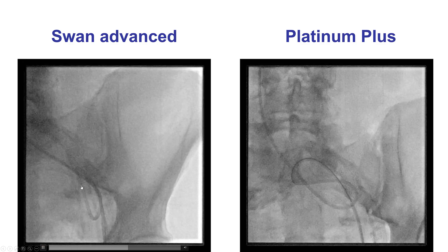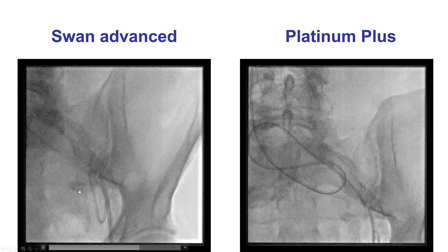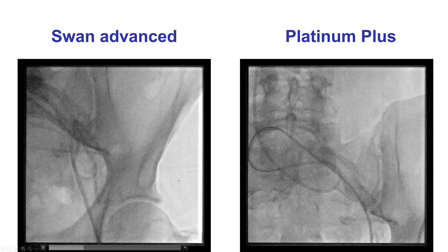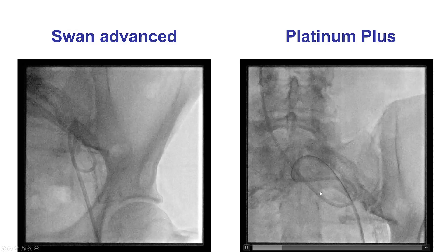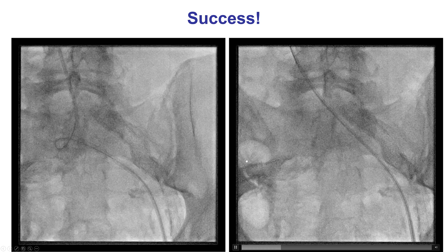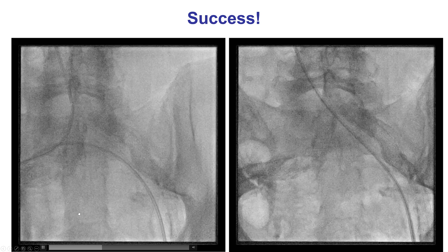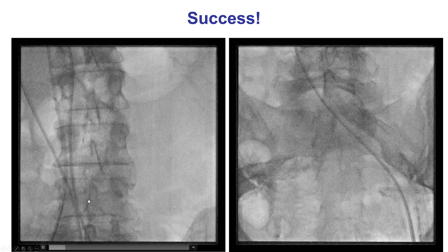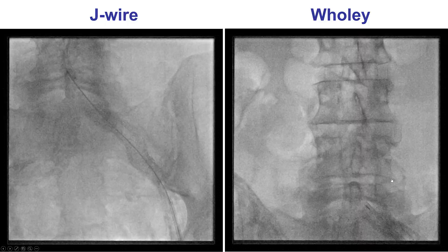So how to solve this problem — and of course, we haven't even started the PCI yet. What we did was re-advance the Swan back into the vessel and then tried to advance the stiff Platinum Plus wire through the Swan. Eventually, after advancing further up, we were able to bring it back. There was still a kink, but eventually by counter-clockwise rotation, we were able to release the kink and straighten out the Swan and then remove the catheter.